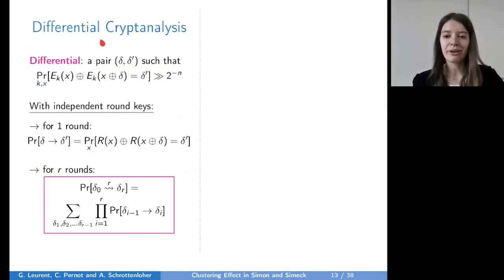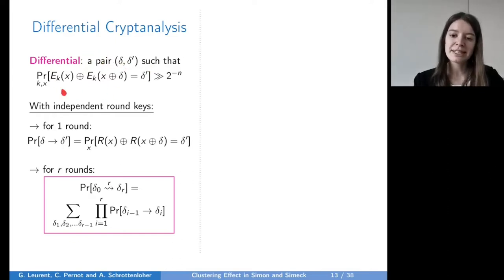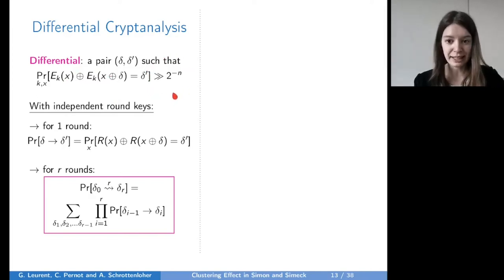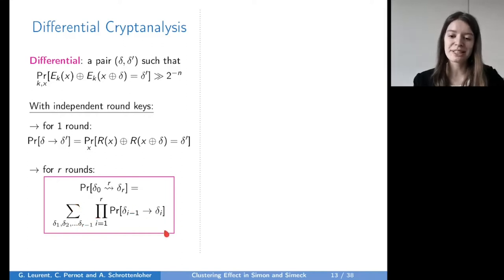To summarize differential cryptanalysis: we study a differential, which is a pair (Δ, Δ') such that the probability of an input difference outputting Δ' is bigger than 2^{-n}. To find differentials, we define the probability transition per round, and the probability of the differential is the sum over all trails of the probability of those trails.